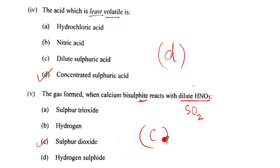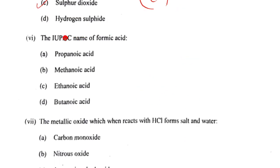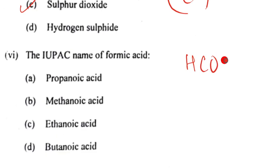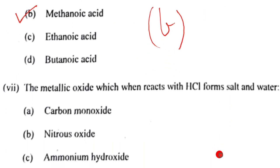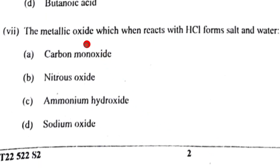Question 6: The IUPAC name for formic acid. Formic acid is HCOOH with one carbon, so it's methanoic acid. The correct option is B. I hope you're scoring your marks. Question 7: The metallic oxide which reacts with HCl to form salt and water. Which one is a metallic oxide? Not carbon, not nitrous, not ammonium. It will be sodium. The correct option is D.